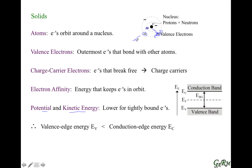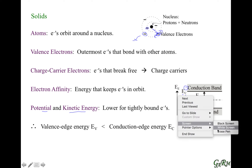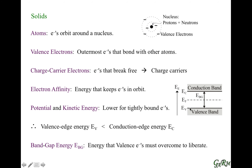This is where we start the energy band diagram. Here we have the conduction band — electrons in the conduction band have higher energy because they can move and are further from the nucleus. Valence electrons have lower energy because they're tightly bound, move less, and are closer to the nucleus. In the energy band diagram, energy increases as we go up.